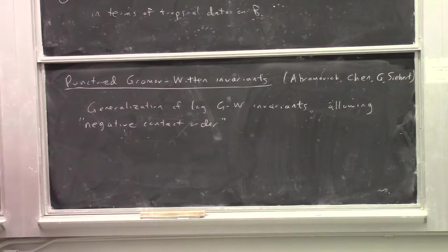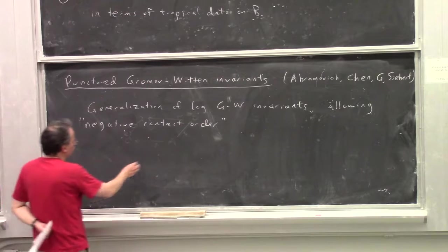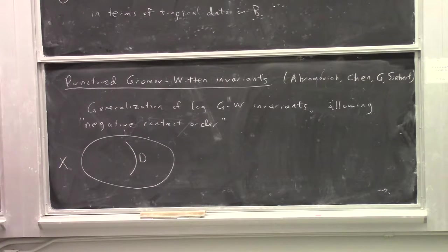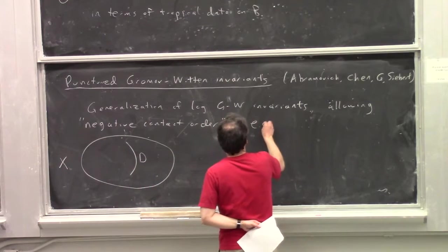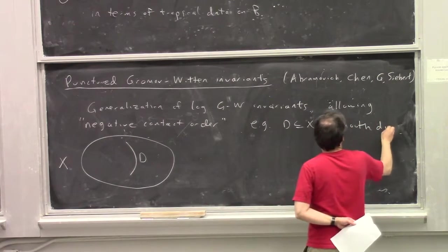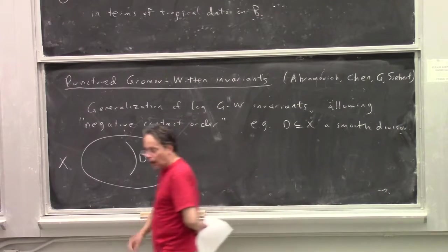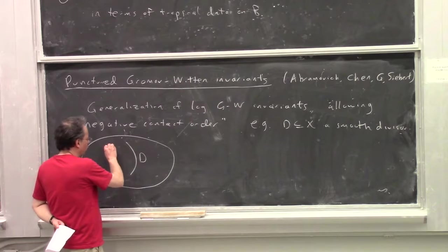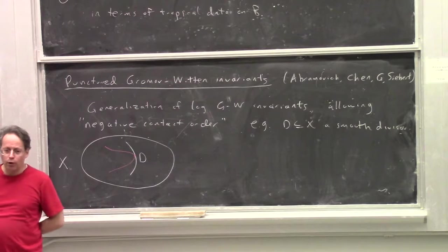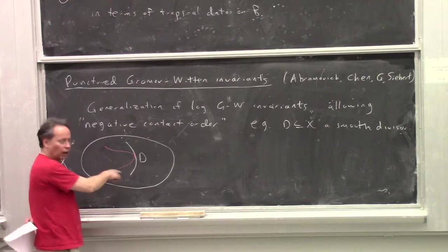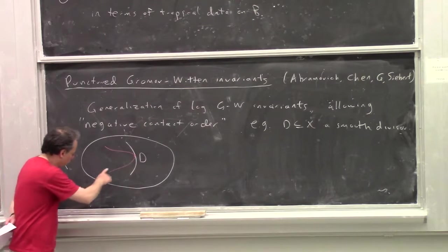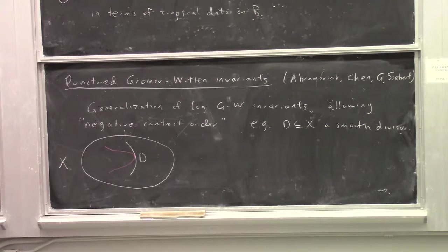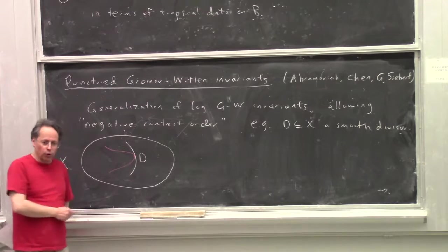The mantra is that this allows negative contact order. Put that in quotes. And let me try to explain what this means in a relatively simple situation. So suppose that you have the case of relative Gromov-Witten invariants, where we just have a smooth divisor D sitting inside a smooth variety X.